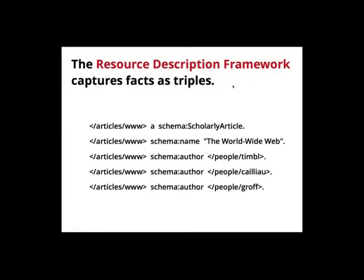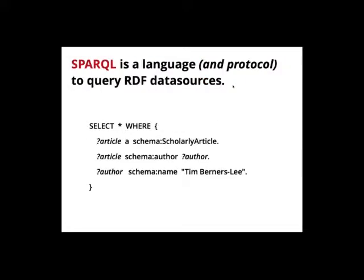Before we start, let me give a brief introduction about the concepts to make sure we're all on the same page. RDF, the Resource Description Framework, is a data model which captures knowledge and information as triples. For instance, we're describing a scholarly article — the name of which is 'World Wide Web,' written by three people. Each triple consists of three parts: a subject, a predicate, and an object. Predicates are reused as much as possible because they are unique identifiers that let machines communicate. For subjects and objects, we try to use URLs so we can look up more information.